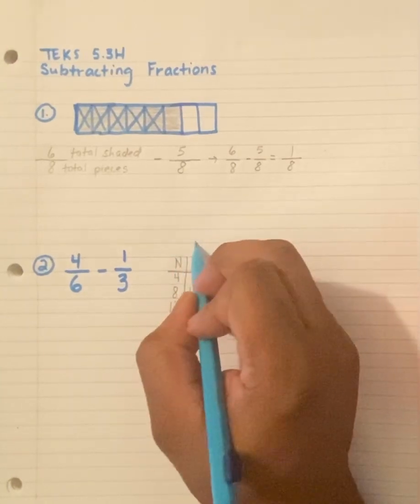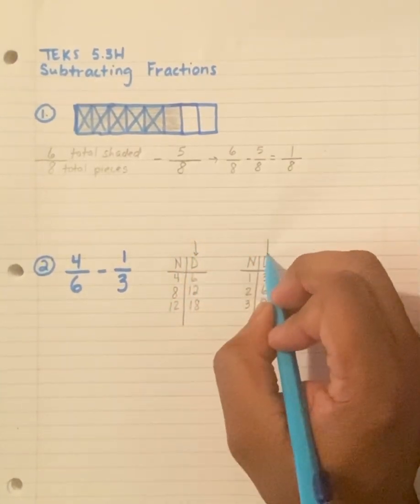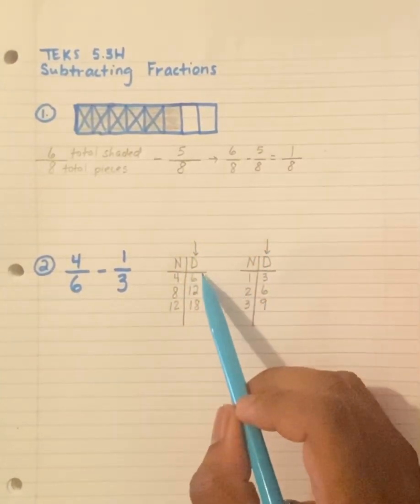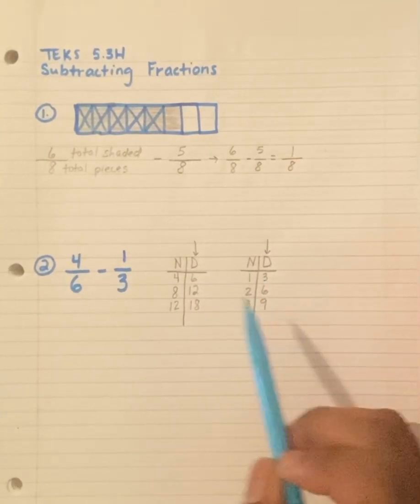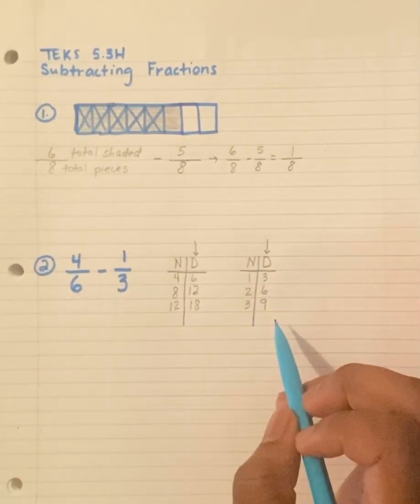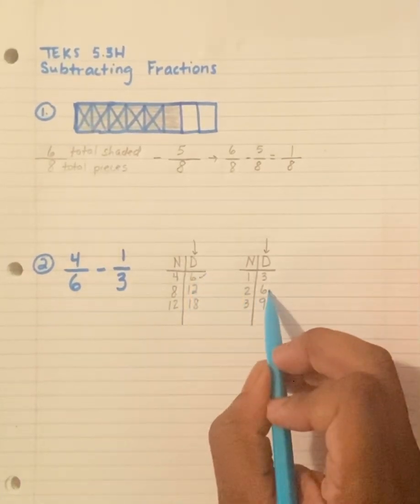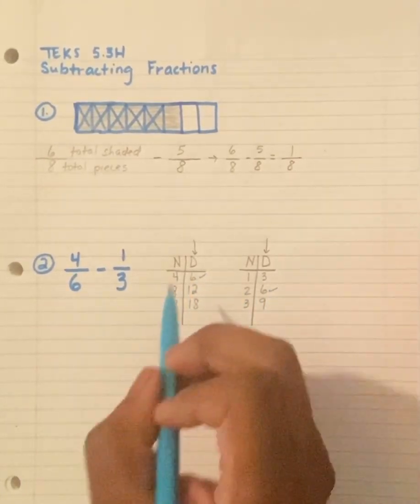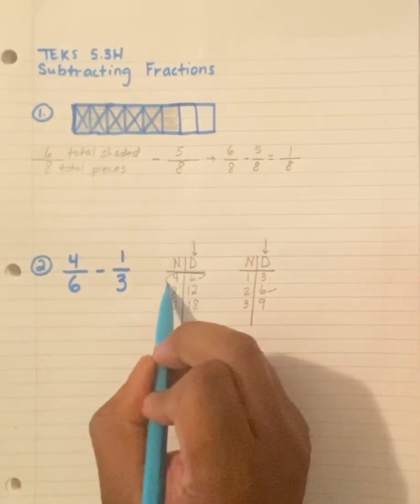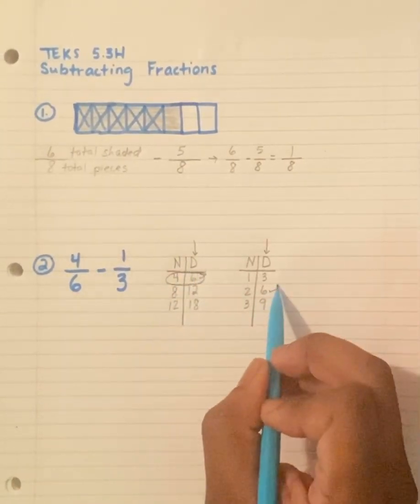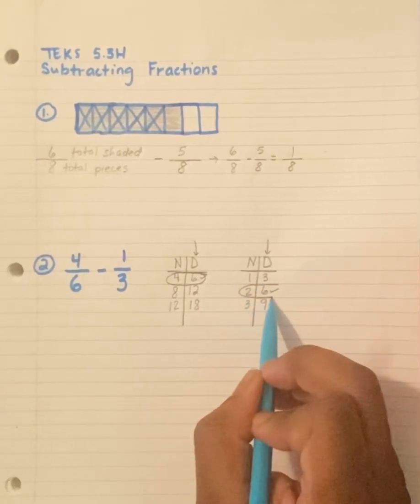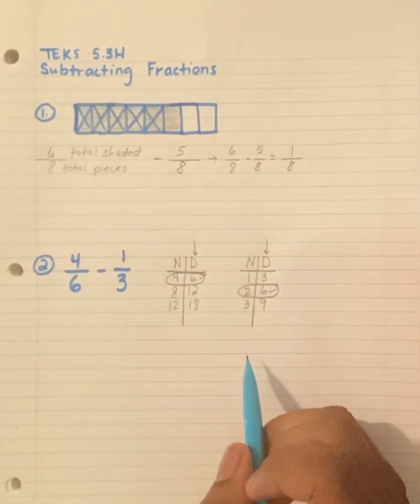Now I'm going to focus on my denominator section. Do I see any numbers in both denominator columns that are the same? I do. 6 and 6. 6, I'm going to circle 4, 6. Then I'll circle 2, 6. Now that I have common denominators, I can subtract.